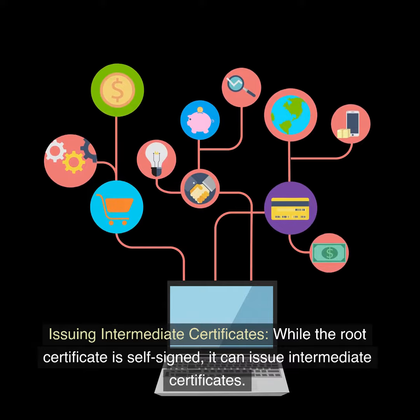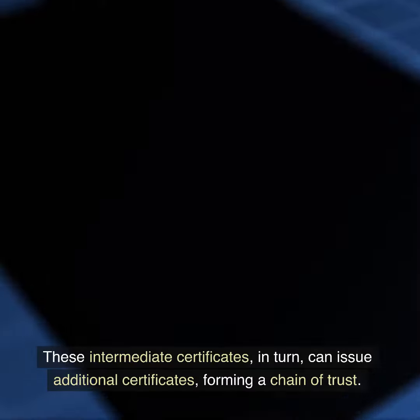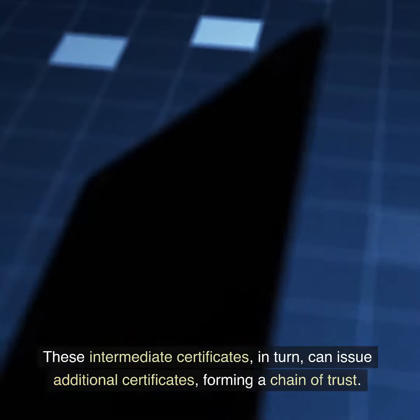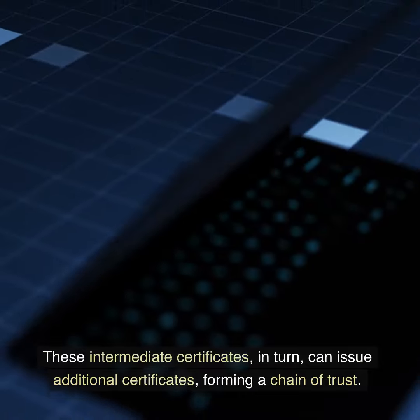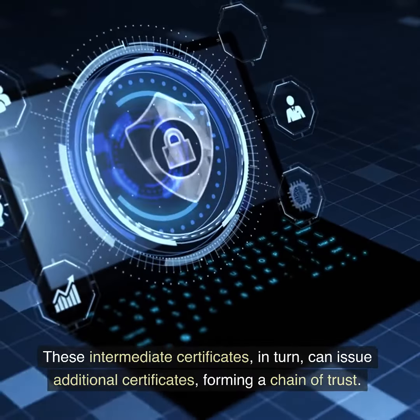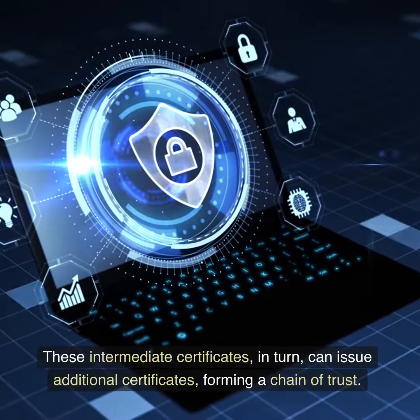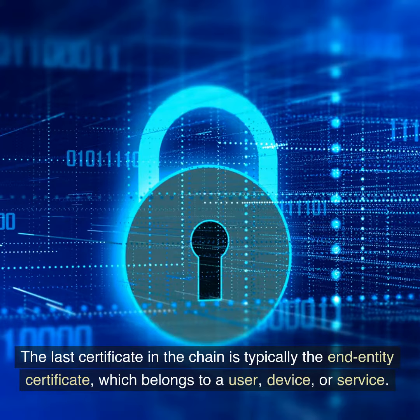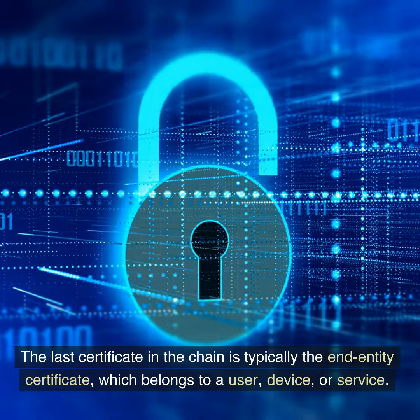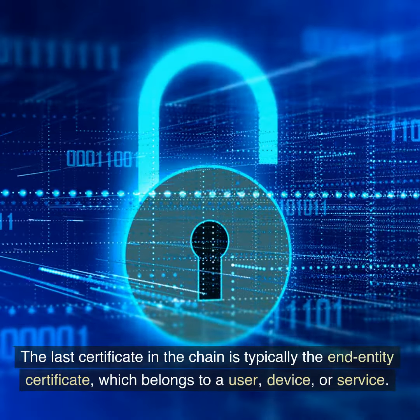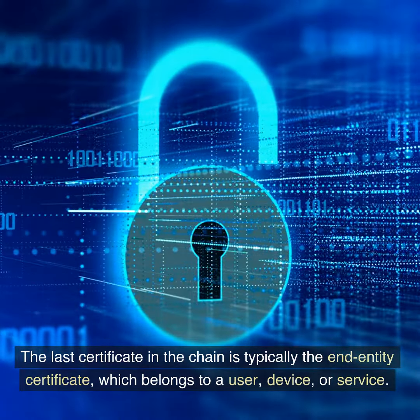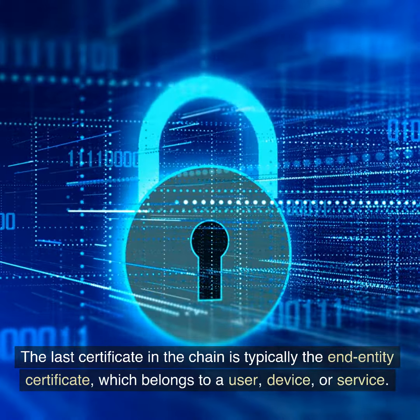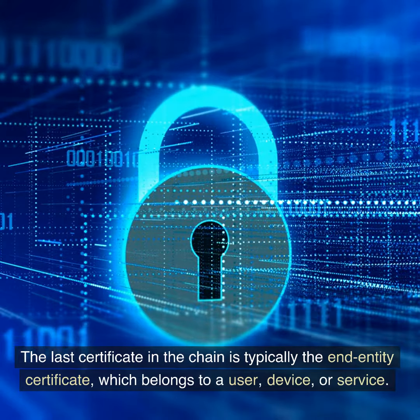Issuing intermediate certificates: while the root certificate is self-signed, it can issue intermediate certificates. These intermediate certificates, in turn, can issue additional certificates, forming a chain of trust. The last certificate in the chain is typically the end-entity certificate, which belongs to a user, device, or service.